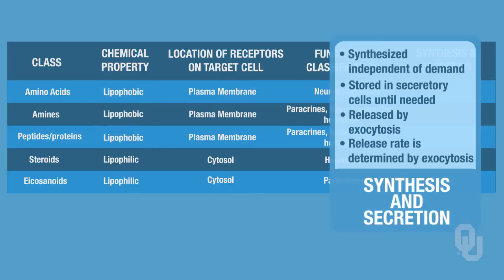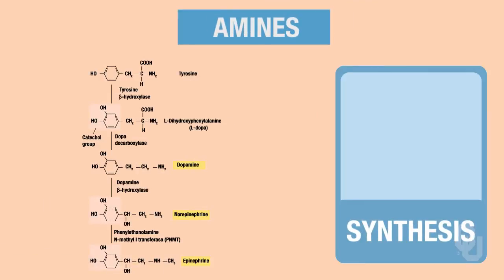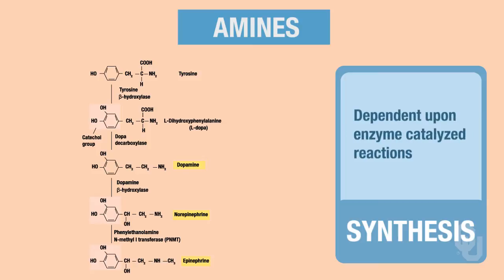Now looking at each of the chemical classes individually, we want to look at how they are actually synthesized and secreted. The amine ligands — their synthesis is dependent upon enzyme-catalyzed reactions. We've spent quite a bit of time talking about enzymes and enzyme-catalyzed reactions. I'd like to give you an example — this is only an example, not for you to memorize — but to understand how amines are synthesized using these enzyme-catalyzed reactions.